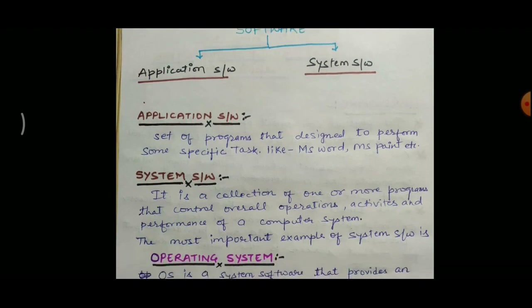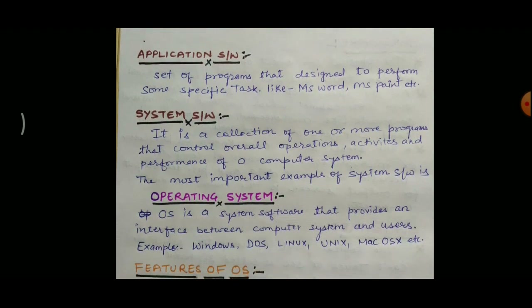The next type of software is system software. System software is a collection of one or more programs that control overall operations, activities, and performance of a computer system. There are many system software available, and one of the most important is the operating system. The operating system is a system software that provides an interface between the computer system and users, and controls overall operations, activities, and performance of a computer system.